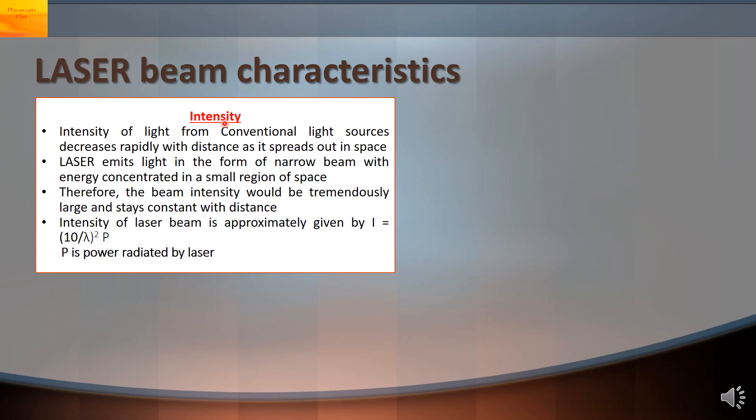Next is intensity. Intensity of light from conventional light sources decreases rapidly with distance. In laser the laser emits light in the form of narrow beam. The energy is concentrated in a small region of space. Therefore the intensity of the beam remains very large and actually remains constant with distance. The intensity remains constant even as distance from the source increases.